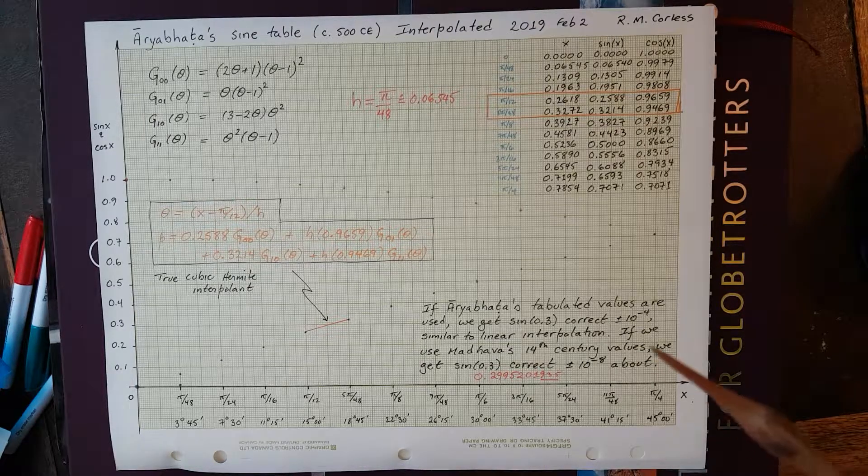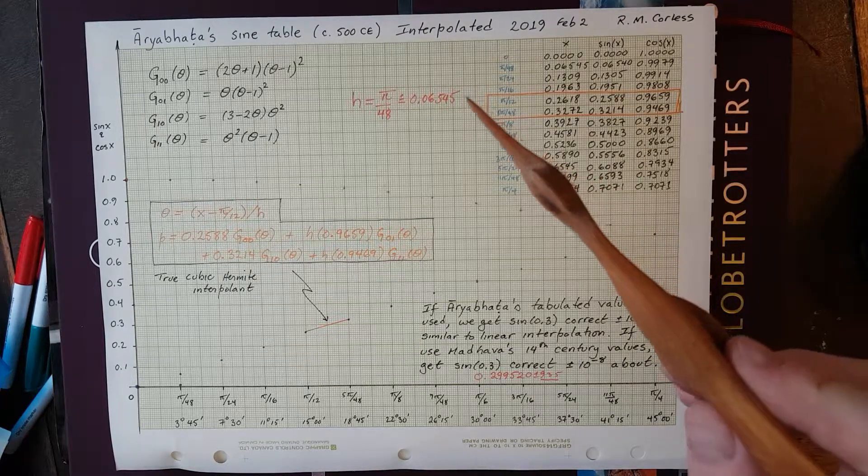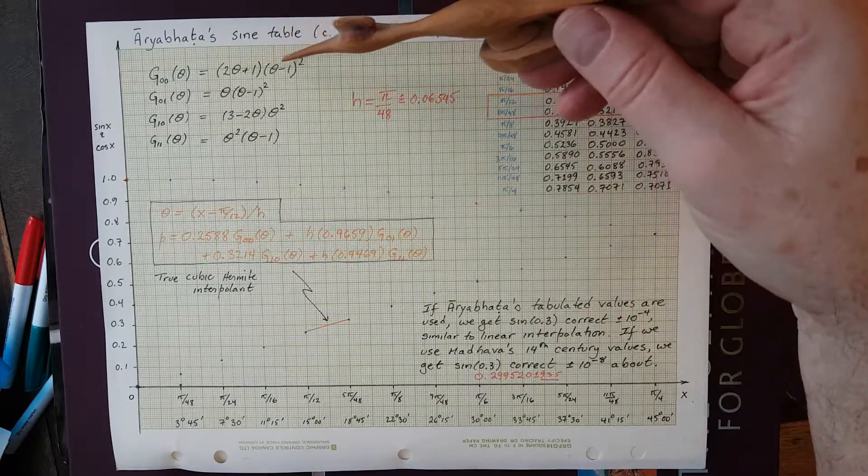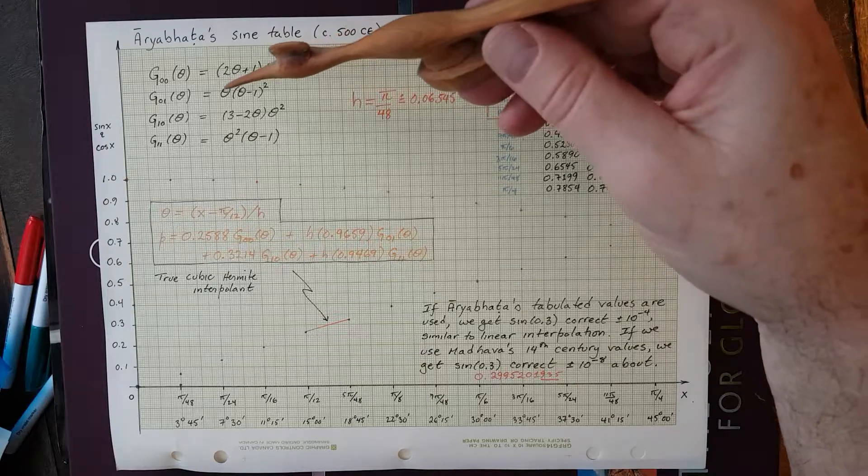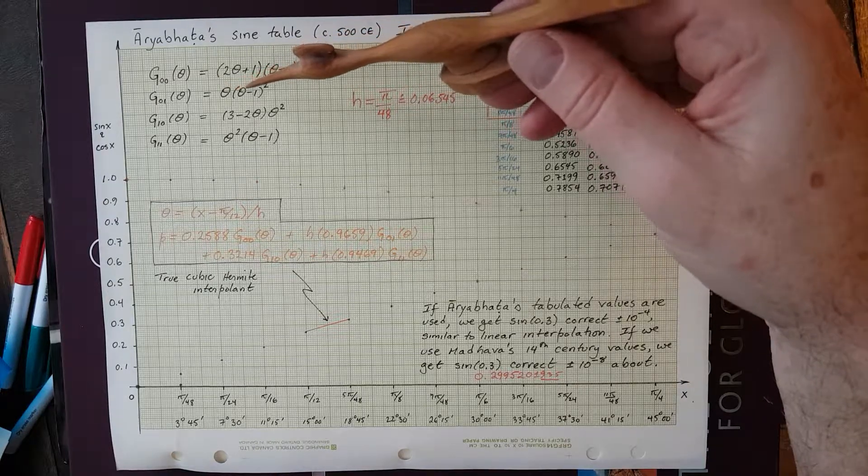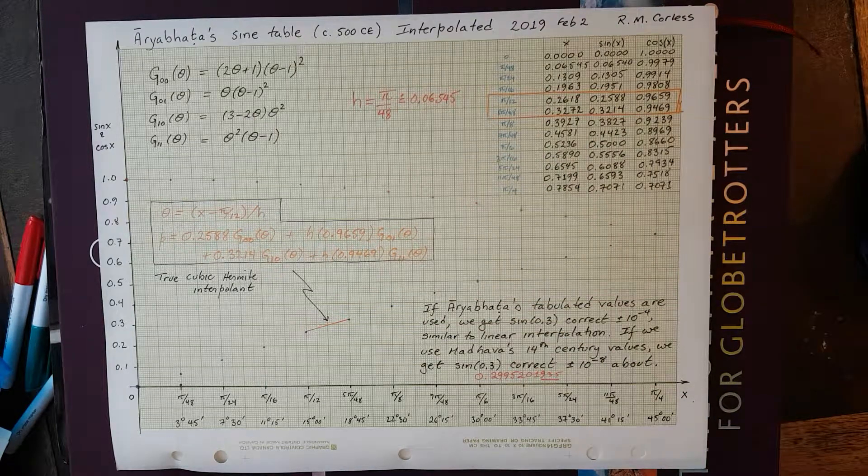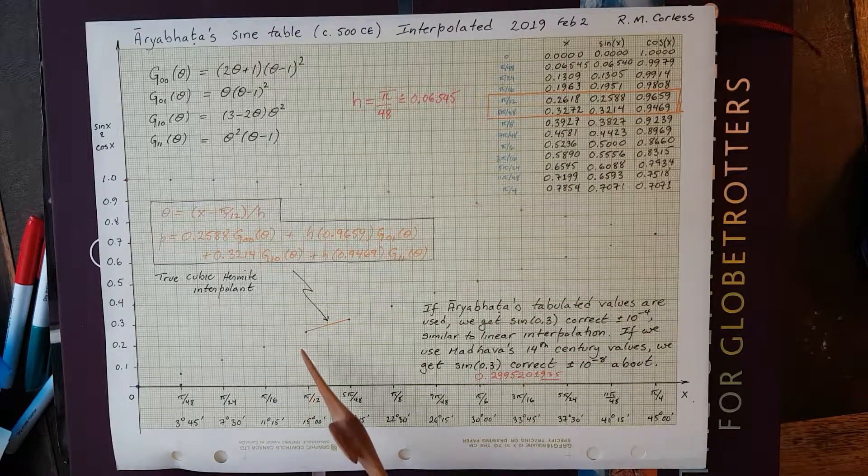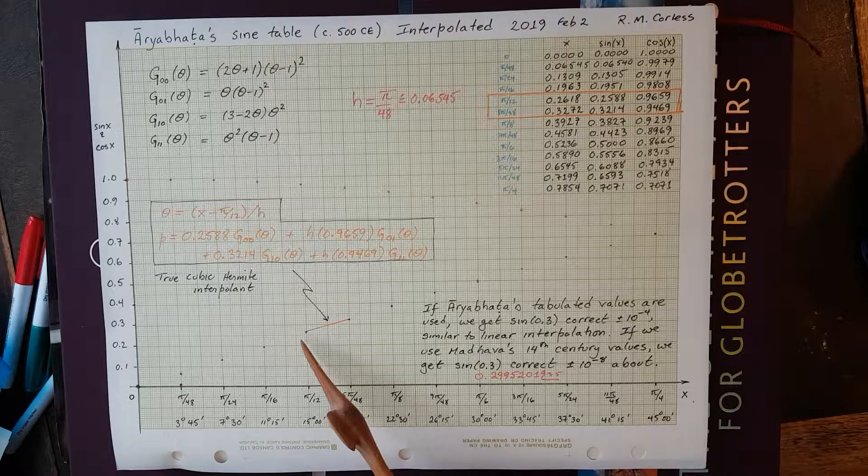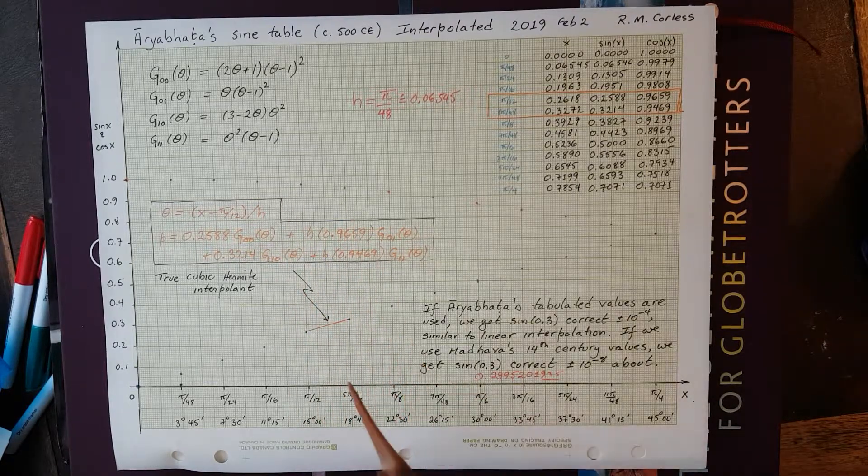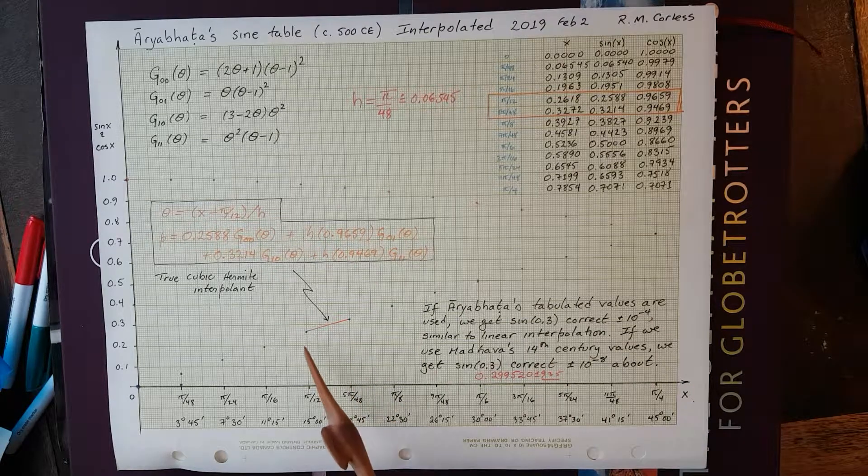So, we saw in the other video that with four functions, g0,0 of theta, which is (2θ + 1)(θ - 1)², and g0,1 of theta, which is θ(θ - 1)², and these other two, we could pick out the values of the function at one end and the derivative at one end and the function at the other end and the derivative at the other end. And that's what we're going to do.